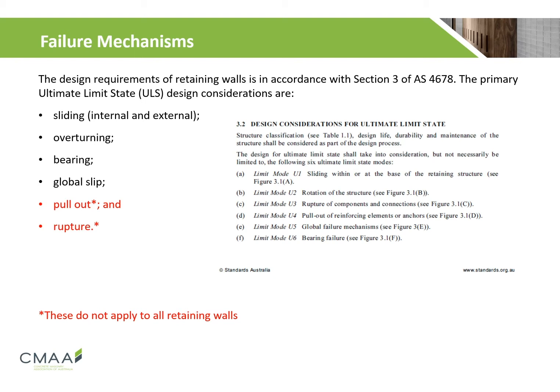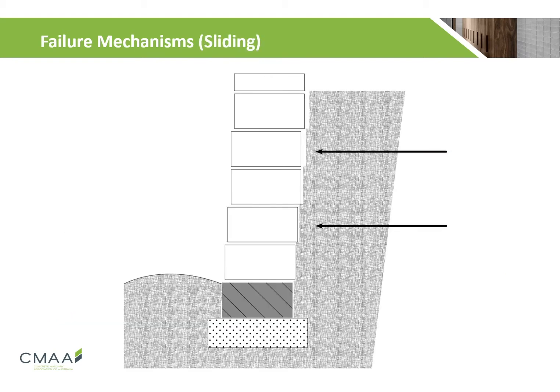For our working example, the failure modes will include sliding and overturning analysis. Depending on your system, stability may also need to be assessed. Sliding failure occurs when the wall moves away from the backfill due to shearing failure at the base of the wall. To overcome sliding failure, the retaining structure must overcome the horizontal force applied to the wall. Sliding can occur both internally, as only a section of the wall failing, or externally, as the whole retaining structure failing.